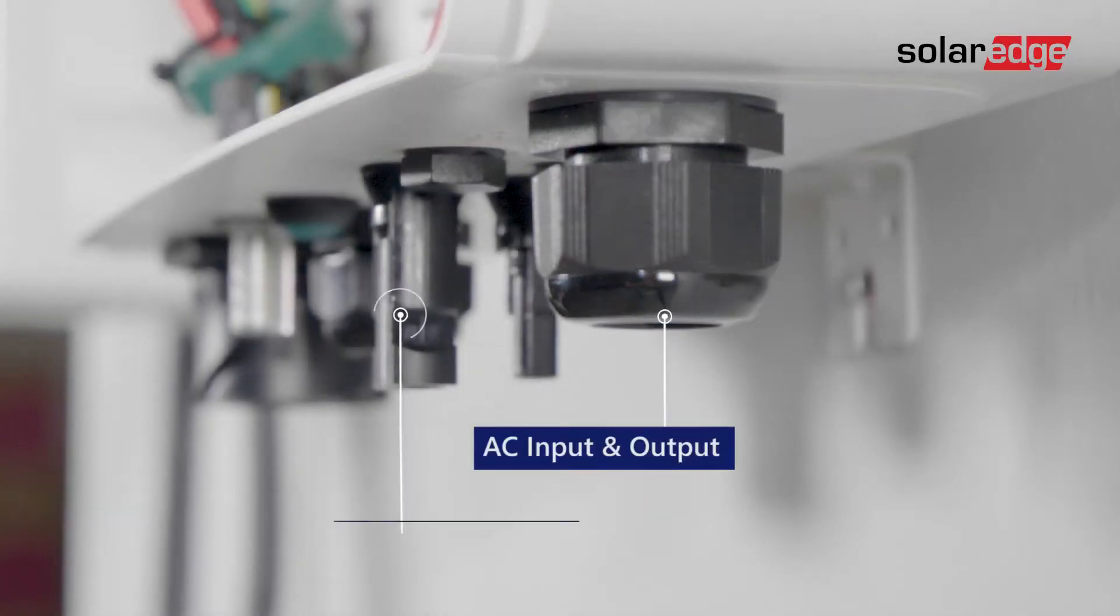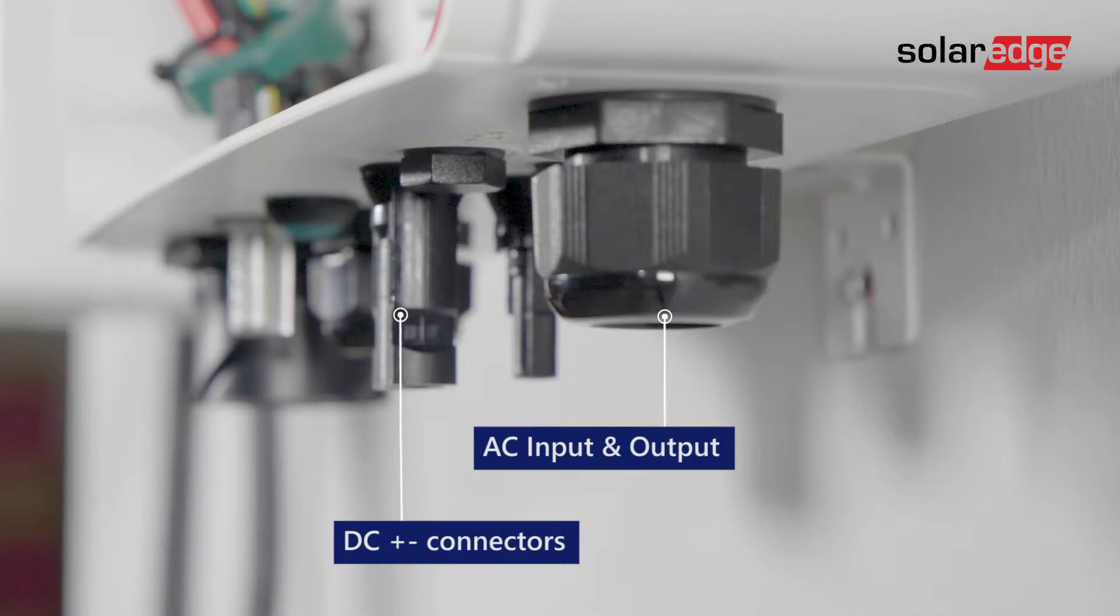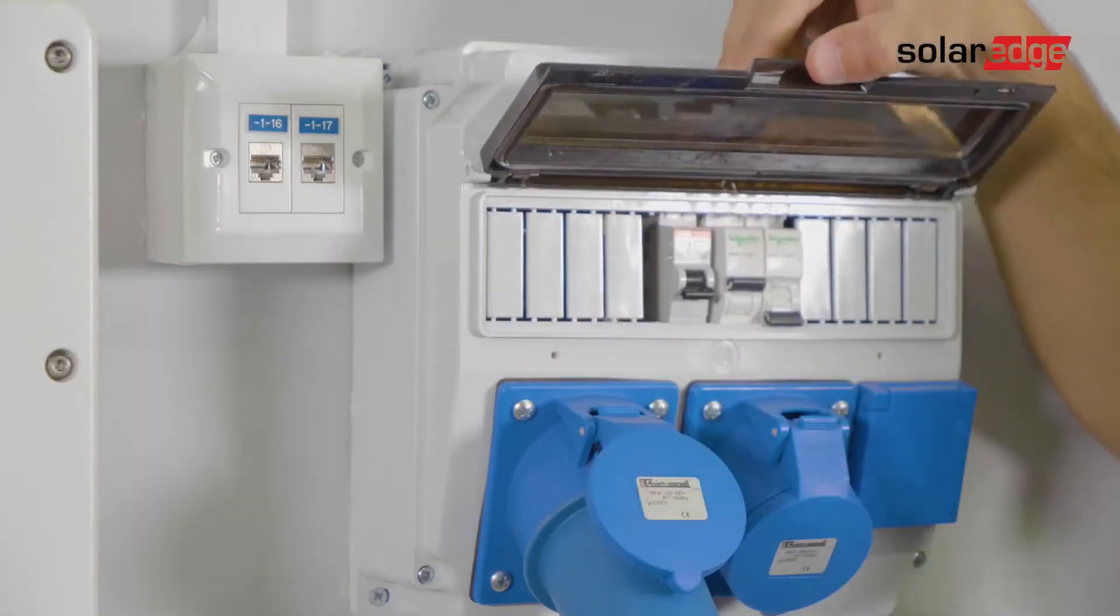Now let's connect the AC and the DC strings to the connection unit. To connect AC grid and grounding, turn off the AC circuit breaker.